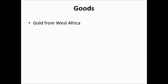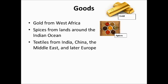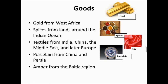The main goods traded were: gold from West Africa; spices of all types — peppers, cinnamon, and everything you could think of from the lands around the Indian Ocean; textiles including silk as a primary one, but India and the Middle East also produced other cloth. Porcelain from China and Persia — another name for porcelain is 'China,' which is where that comes from. And amber from the Baltic region — fossilized tree sap that can be very beautiful. For those who watched Jurassic Park, that's what they got the mosquito out of to extract dinosaur DNA.